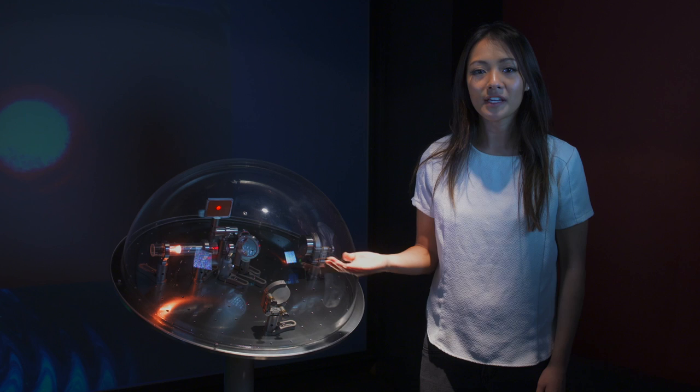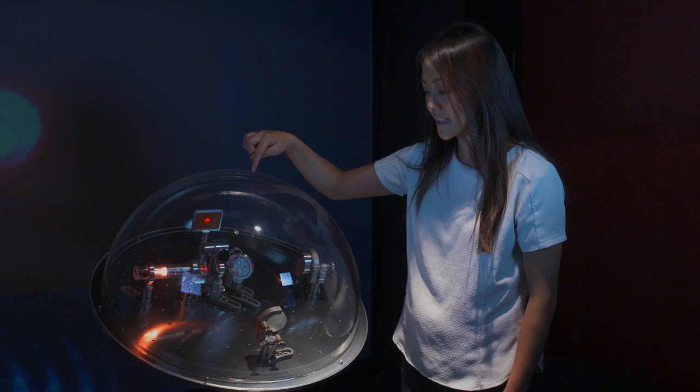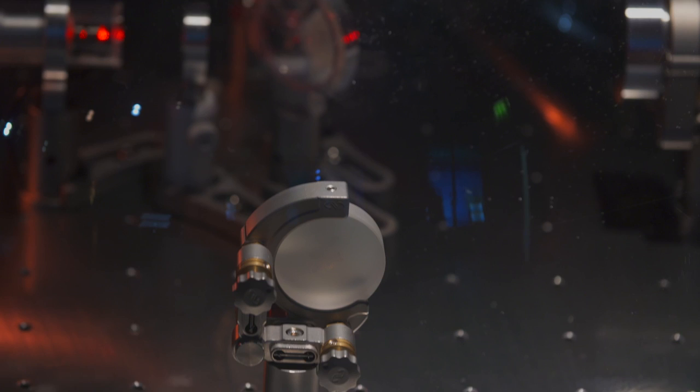This is a Mickelson interferometer, a mini gravitational wave detector. This light source is a laser. It travels along this path to this beam splitter where the light is split into two. One travelling this way and the other travelling this way. They hit mirrors where they reflect back and recombine at the beam splitter.